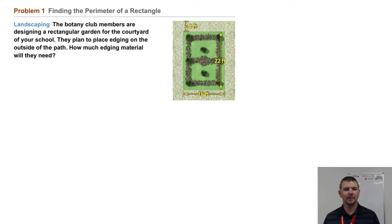Problem 1: Finding the perimeter of a rectangle. The botany club members are designing a rectangular garden for the courtyard of your school. They plan to place edging on the outside of the path. How much edging material will they need? Let's consider the image. Looks like we have a garden with a length of 22 feet and a width of 16 feet, and the border or edging material would need to be a total of 4 feet wide.